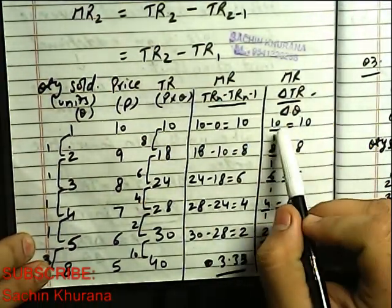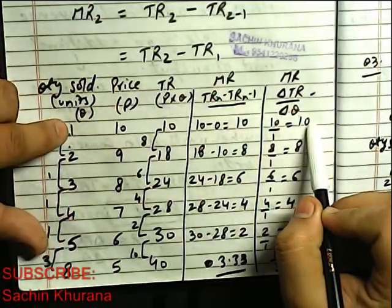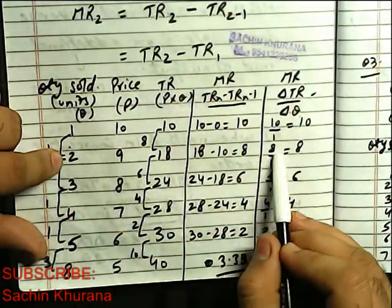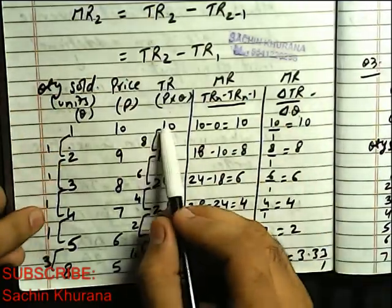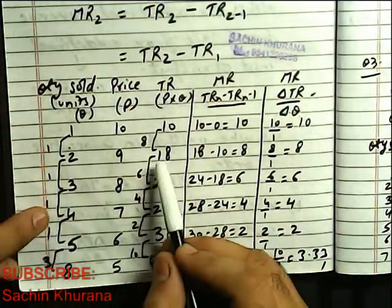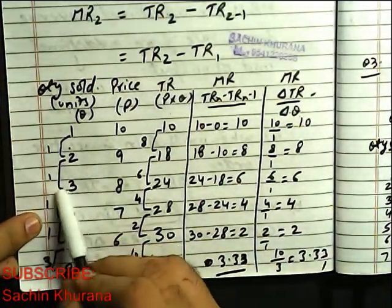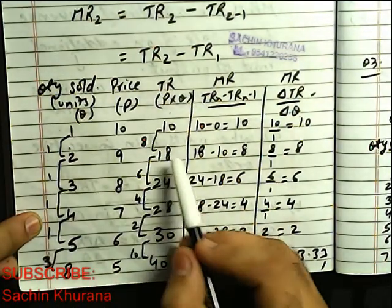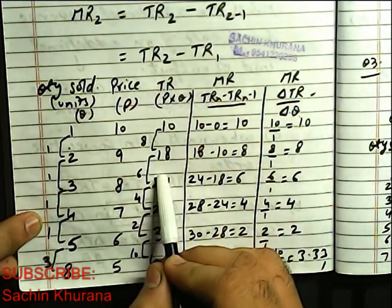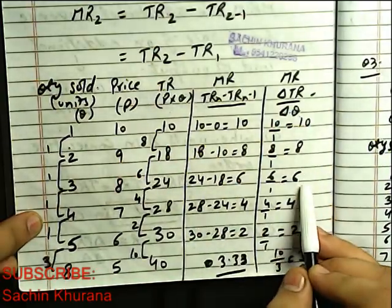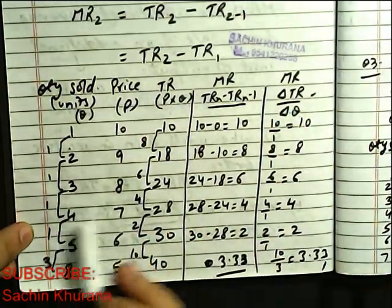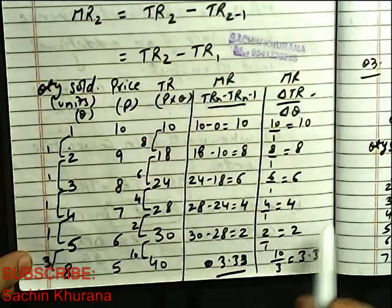So let me see, here, 10 upon 1 is 10, 8 upon 1 is 8, because here change in 8, here change in 1. Here change in 6, here change in 1, getting my point? So change in TR is the MR. So 6 and 1, 4 and 1, 2 and 1.